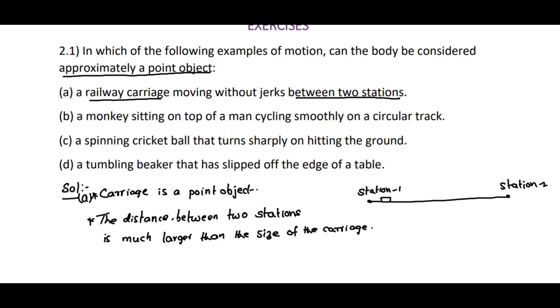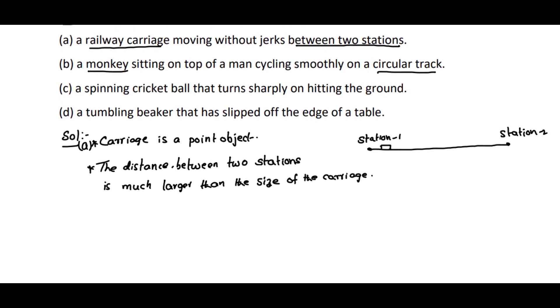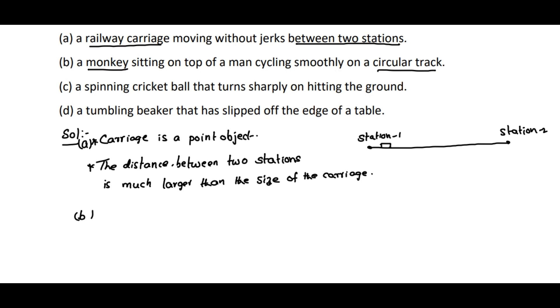Coming to B, a monkey sitting on the top of a man cycling smoothly on a curved track. Here the monkey also will be considered as point object. The monkey can be considered as point object. The reason, the size of the monkey